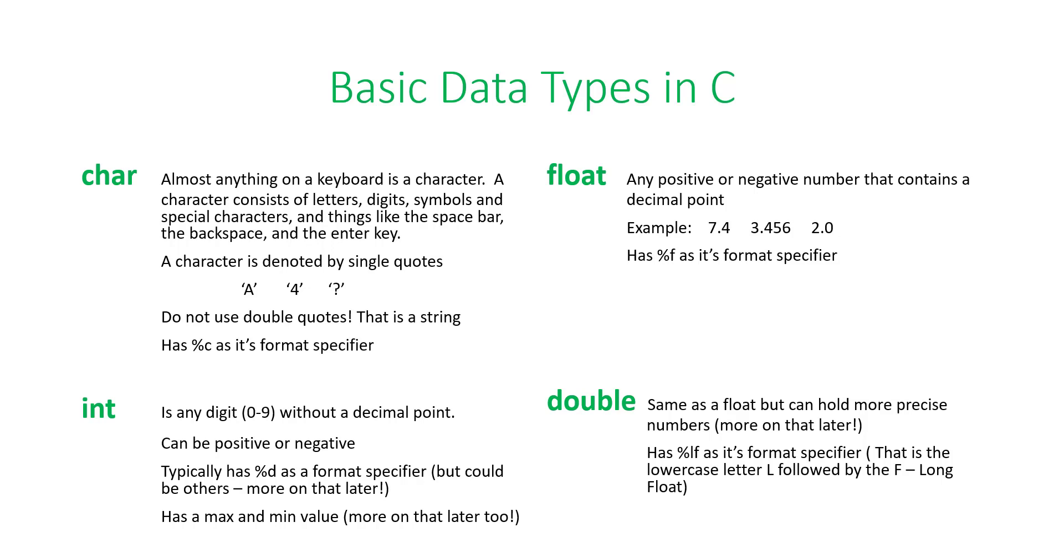It can also be positive or negative and typically has a percent D as a format specifier. We're going to learn about all kinds of other ones later, but percent D is what I'm going to use. It stands for a decimal integer right now. So, don't confuse the decimal with the decimal point. That's different. It also has a max and a min value, and we're going to talk more about that later, too.